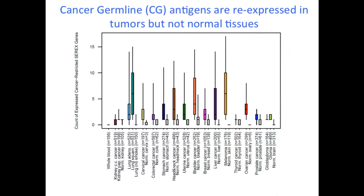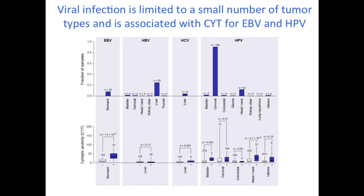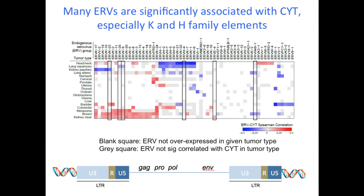We also looked at other types of antigens to see if they're driving cytolytic activity, and they don't. Cancer germline antigens that are re-expressed — viral infections such as EBV and HPV are associated with higher cytolytic activity in tumors that have them. And endogenous retroviruses, which are often ignored, include examples that are positively correlated with cytolytic activity in particular tumors. We believe there are actually tumor-specific endogenous retroviruses living in your body that are stimulating these responses.